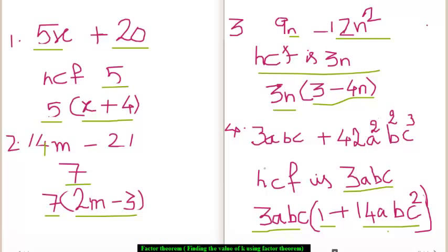In the fourth example, we have 3abc plus 42a square b square c cube. Here we get the HCF as 3abc, and then when we factorize, we get the factors as 3abc times 1 plus 14abc square.